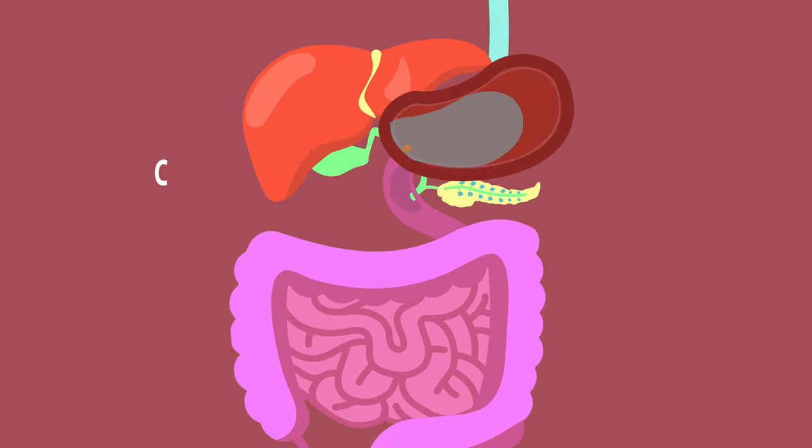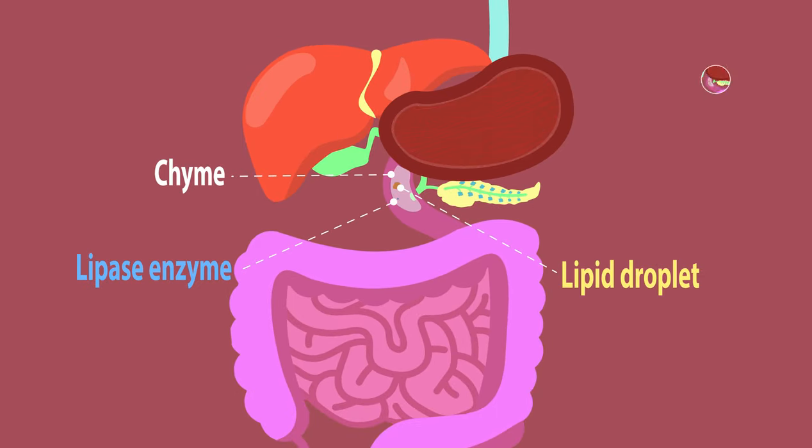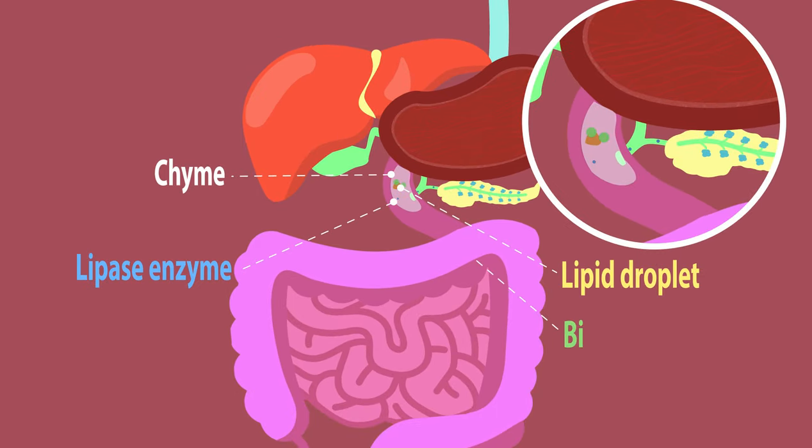This is a problem because it means that the lipids have a small surface area for the lipid-digesting lipase enzymes to work on. The lipase enzymes are added in the small intestine. At the same time, a special substance called bile is also added to the chyme.